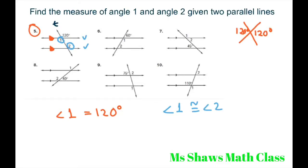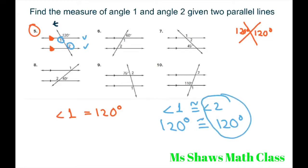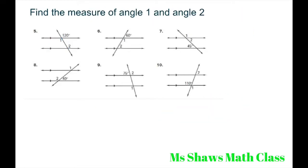Therefore, angle 1, which is 120 degrees, is congruent to 120 degrees. So angle 2 is 120 degrees.